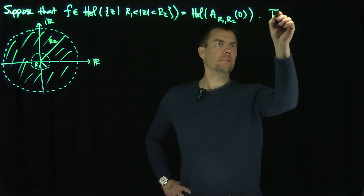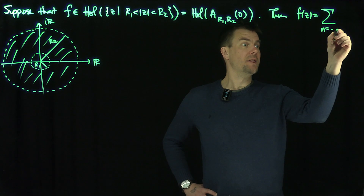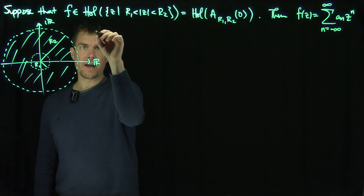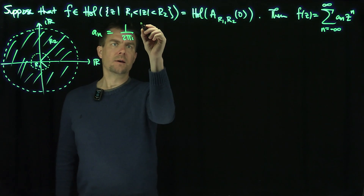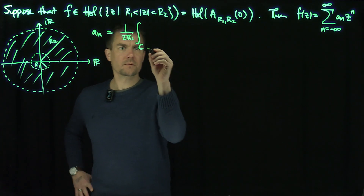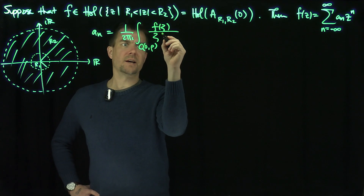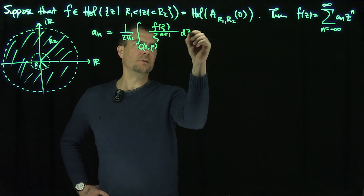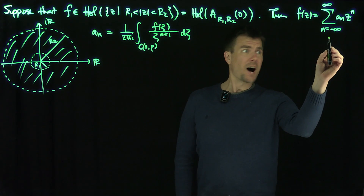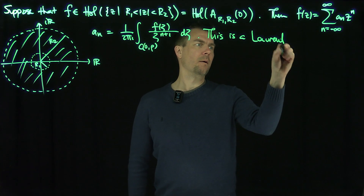And now we claim that F of z is equal to the sum, n goes from negative infinity to infinity, of a_n times z to the n. Where a_n is 1 over 2πi times the integral over a circle C centered at 0 of some radius ρ (to be specified), of F(ζ) over ζ to the power n+1, dζ. These are the Laurent coefficients, and this expansion is called the Laurent expansion — not a Taylor expansion, since we go from negative infinity to infinity.